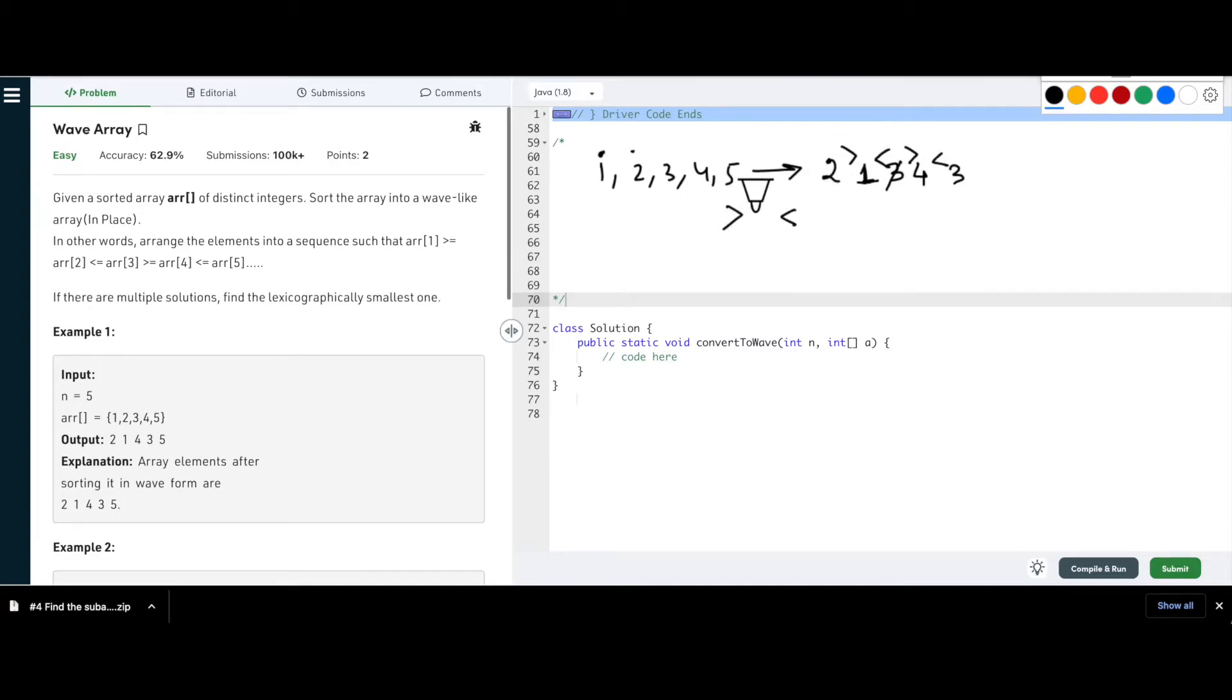This is what we're trying to do. We're making sure that this is greater than this, and this is less than. This is greater, this is less. That's the entire logic: greater than, lesser, greater, then lesser. This is the sequence we have to follow.